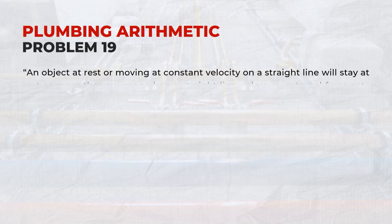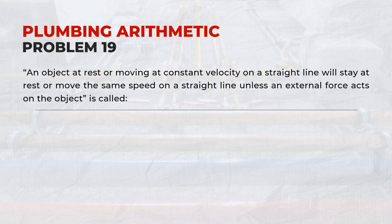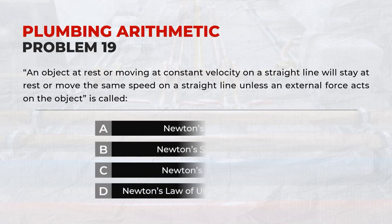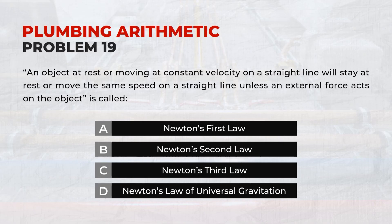An object at rest or moving at constant velocity on a straight line will stay at rest or move the same speed on a straight line unless an external force acts on the object — this is called Newton's Second Law.